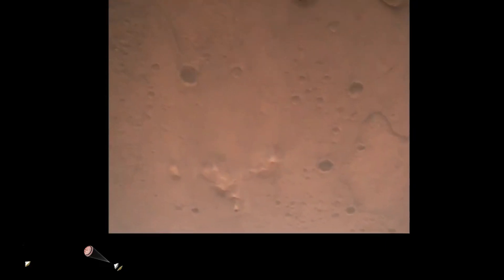Nav filter converged. Velocity solution 3.3 meters per second. Altitude 7.4 kilometers. Now has radar lock on the ground. Current velocity is about 100 meters per second, 6.6 kilometers above the surface of Mars.